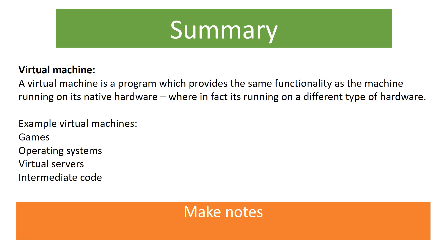Here's our summary. A virtual machine is a program which provides the same functionality as the machine it's running on, but on its native hardware. It's actually running in your computer using your hardware, even though it might seem like it's using an older or a different system. We have lots of examples of these such as games, operating systems, virtual servers and intermediate code.